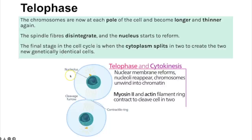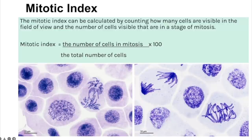In telophase, chromosomes at each pole become longer and thinner, spindle fibres disintegrate and the nucleus starts to reform. The final stage — cytokinesis — is when the cytoplasm splits to create two genetically identical cells. The mitotic index can be calculated by counting the number of cells in a stage of mitosis divided by the total number of cells visible, multiplied by 100.